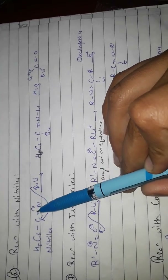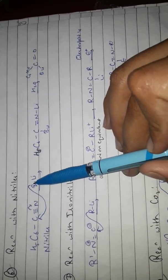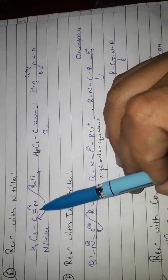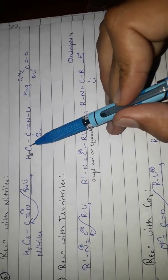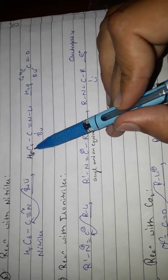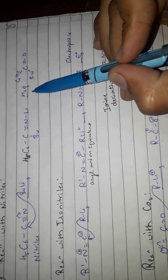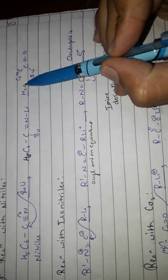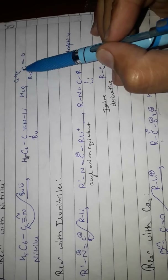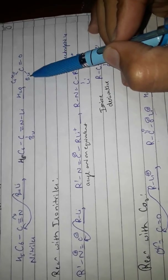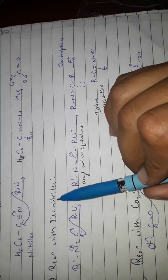Reaction with nitriles: when nitriles react with n-butyl lithium, the butyl group shifts onto the carbon of the nitrile and the bond shifts to nitrogen, forming C6H5–C(Bu)=N–Li. On hydrolysis, this gives C6H5–CO–Bu (a ketone product).